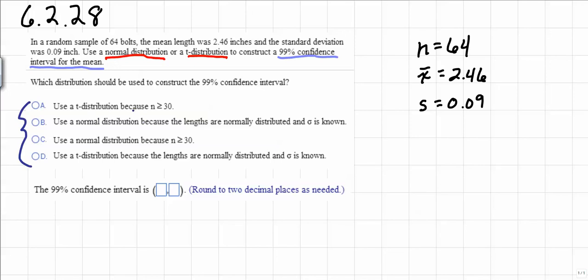If we look very carefully, we're given a multiple choice scenario here. Are we going to use a t-distribution because n is greater than or equal to 30? That would be false since to use a t-distribution, n must be less than 30. Use a normal distribution because the lengths are normally distributed and sigma is known. That is not the case. Choice C, use a normal distribution because n is greater than or equal to 30. That's the one that we would use because our sample size is 64 bolts.